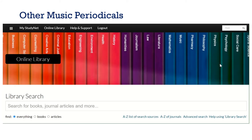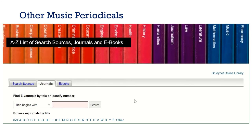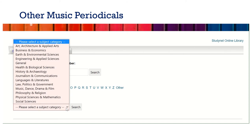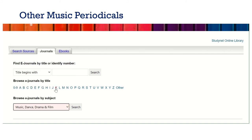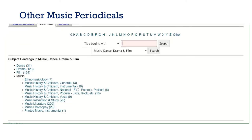If you would like to see what other music periodicals are available at the university, then from the online library click once more on the A to Z of journals. This time rather than searching for a title, scroll down to browsing by subject, and you can then use the drop-down to come to the music section or any other sections that you may be interested in, and then see what is available for your area of interest.